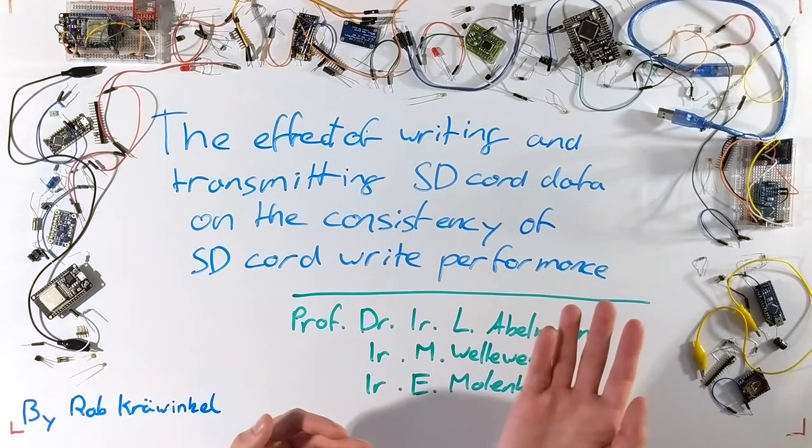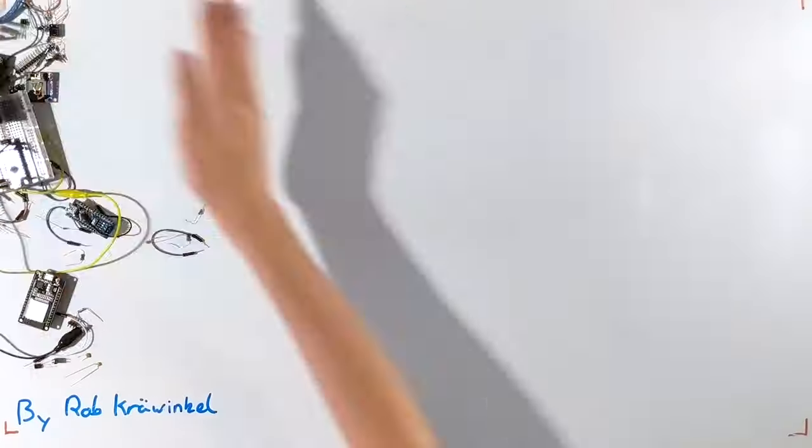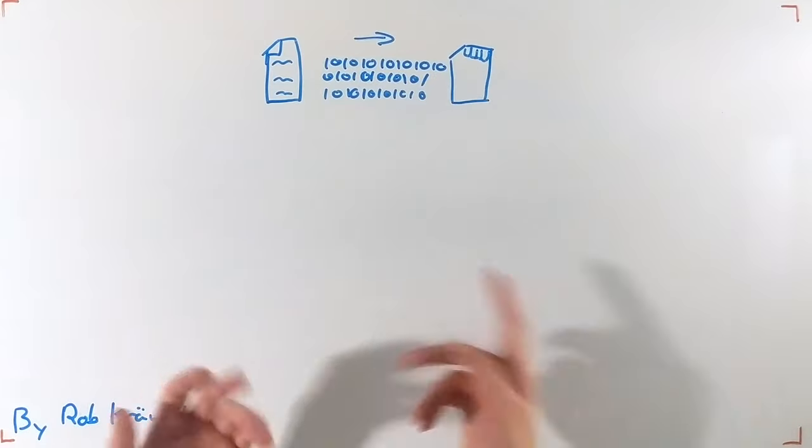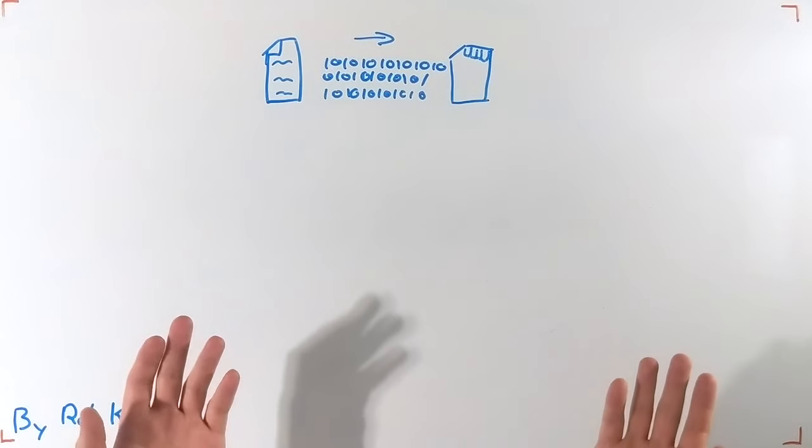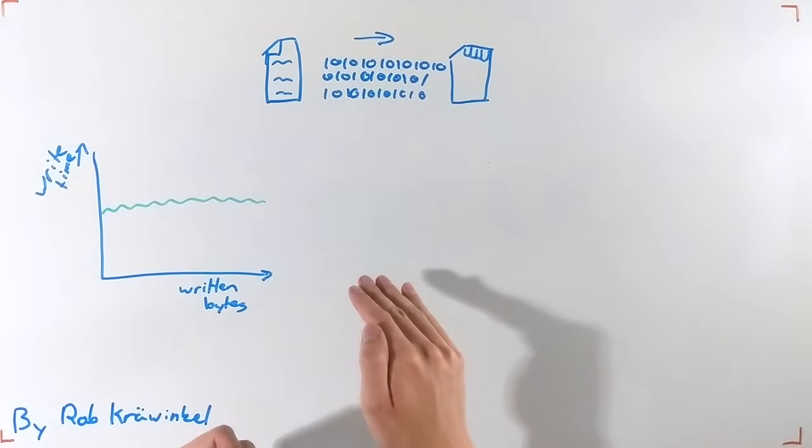This video will be about the effect of writing data to an SD card and transmitting that wirelessly on the consistency and write performance to the same SD card. I would like to start off with a quick overview showing the importance of the research that was done. When writing data to an SD card over an SPI interface, either continuously or in batches, one would expect the write time to look something like this, mostly flat.